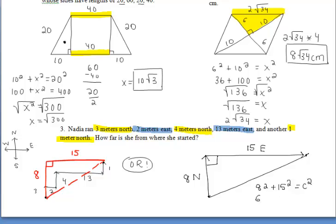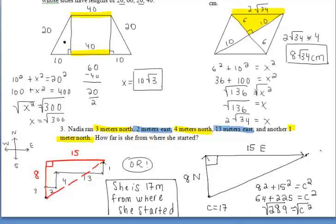Equals hypotenuse squared, which we don't know. So I'll just call it C squared. So we take the square root of both sides of the equation to solve for C. And we end up getting that C is 17, which means that Nadia is 17 meters from where she started.